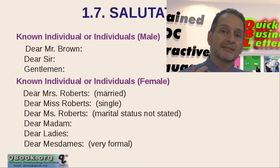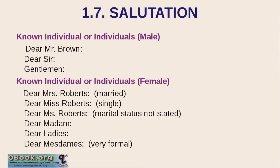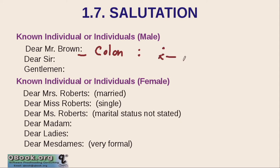Let's take a look at what happens next in the opening: the salutation. The salutation is what you've seen many times before — something like 'Dear Somebody.' An important thing to remember is this colon here. A colon is two dots, and an English colon is different from a Chinese colon. This colon has no space before it and one space after it — no space before the colon, one space after the colon.